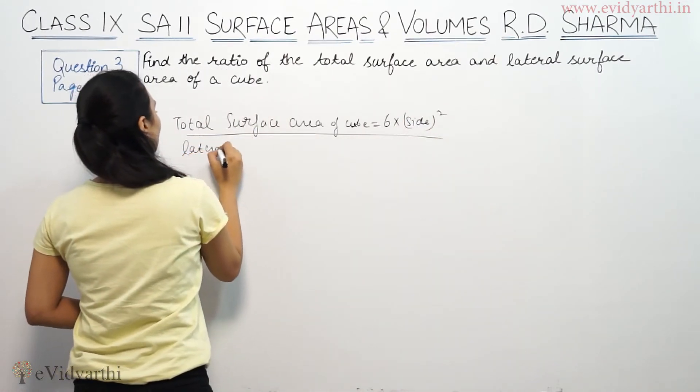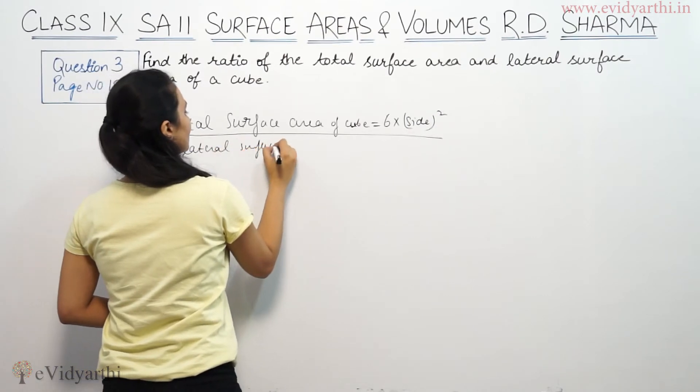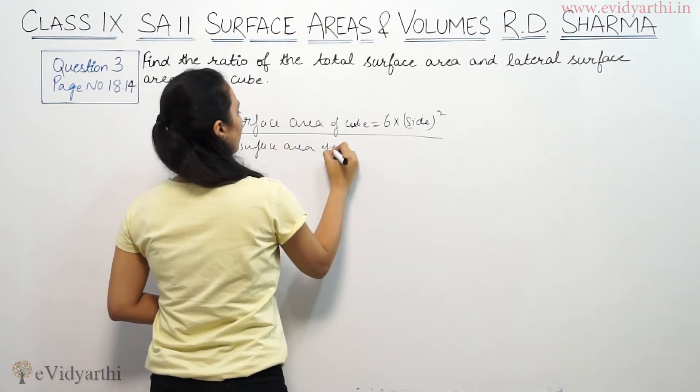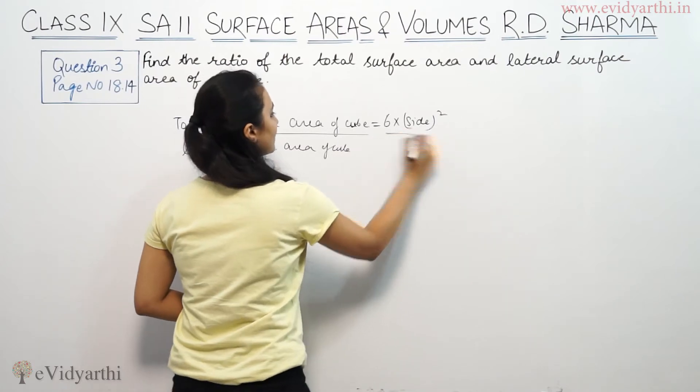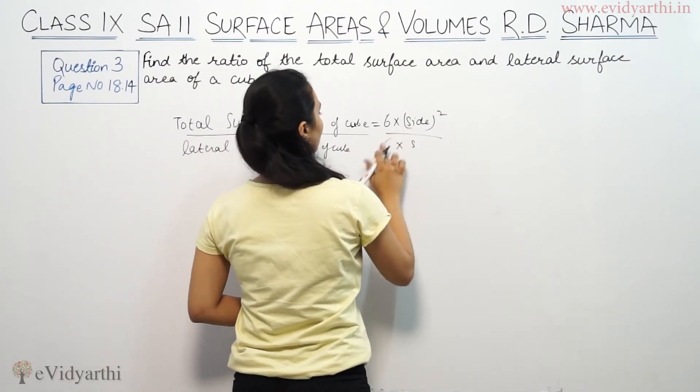Lateral surface area of cube is 4 into side squared.